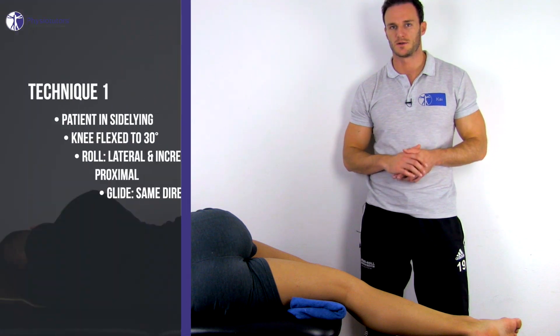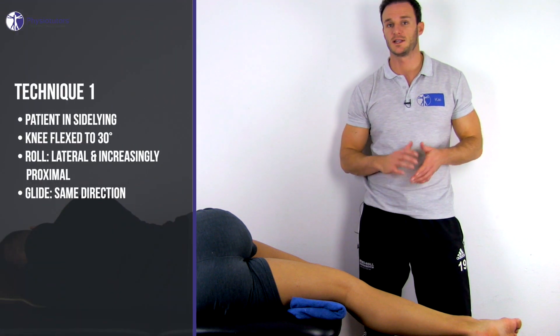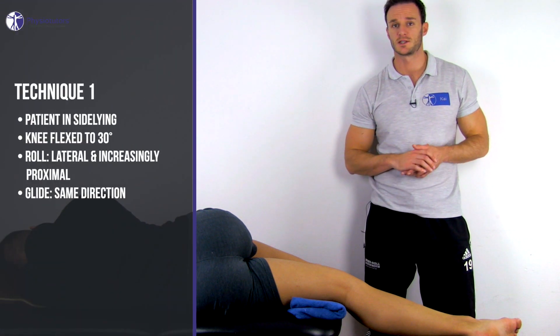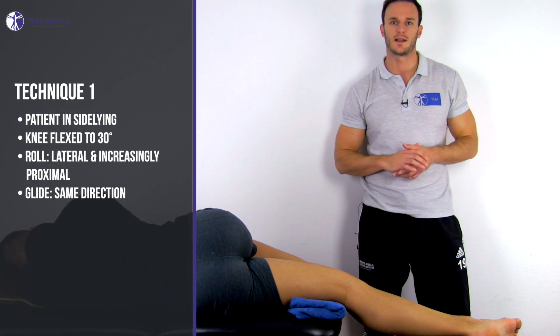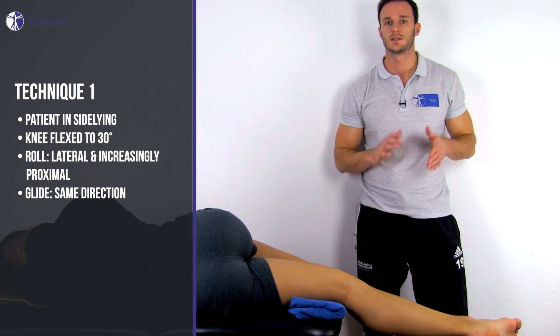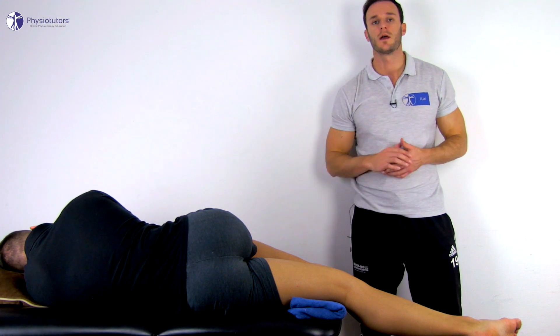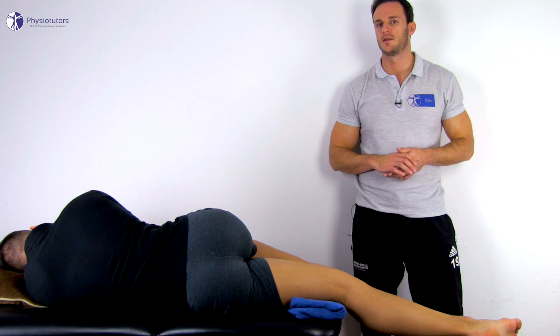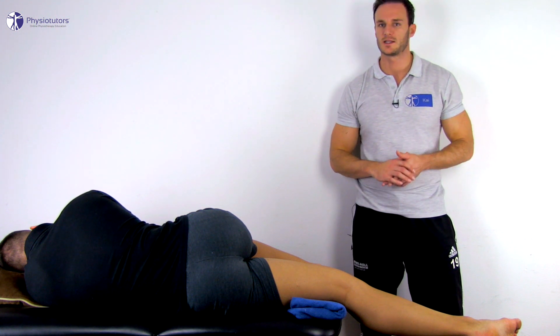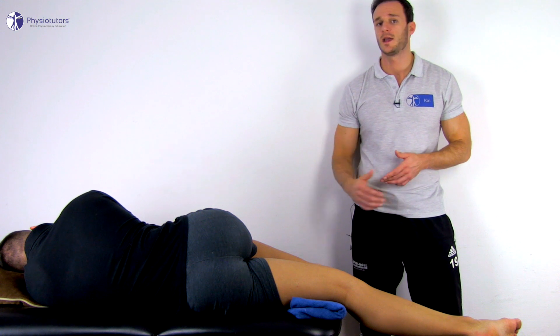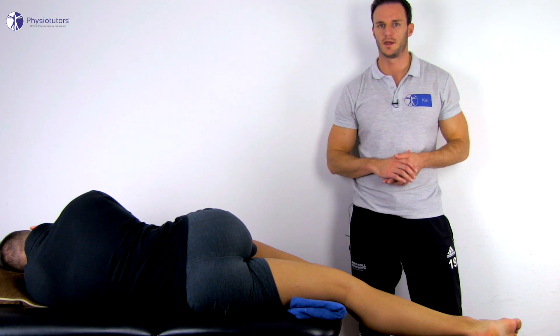To assess the medial capsule, have your patient in sideline position with the leg to be examined positioned so that the femur is resting on the edge of the table with a towel underneath and the tibia hanging freely. The other leg can be flexed and supported by a pillow in order to make it comfortable for the patient.